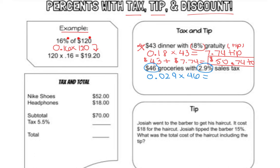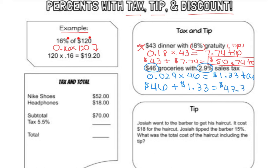This equals 1.334, but because this is money we round to the hundredths place, so $1.33 for tax. Now let's find the total groceries including tax: $46 for groceries plus $1.33 for tax equals $47.33 total for the groceries including tax.